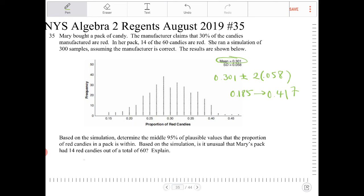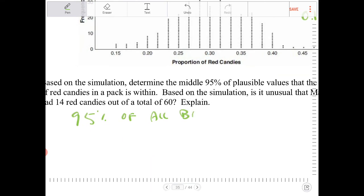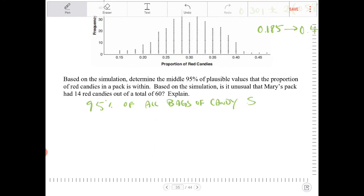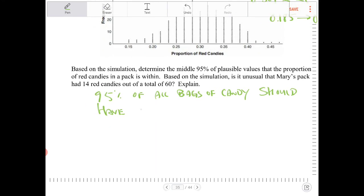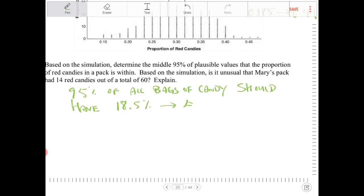So, 95% of all bags of candy should have anywhere between 18.5% to 41.7% of red candies.